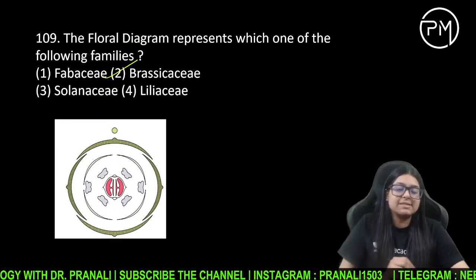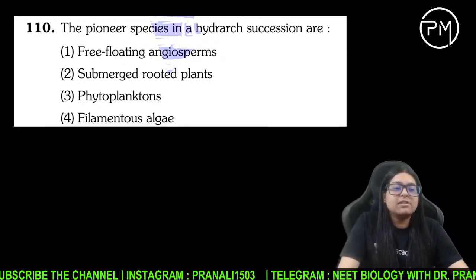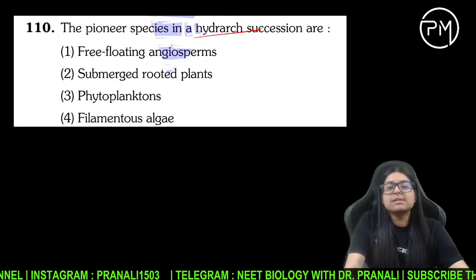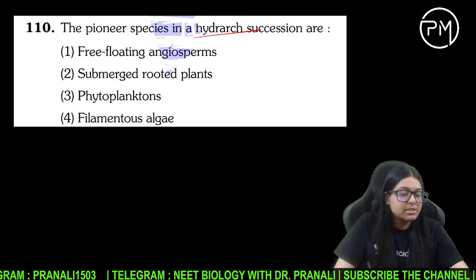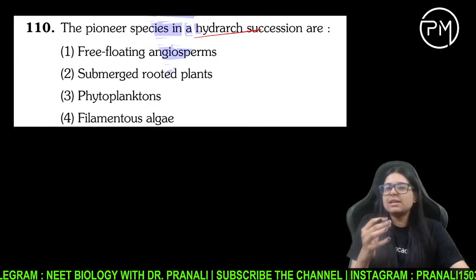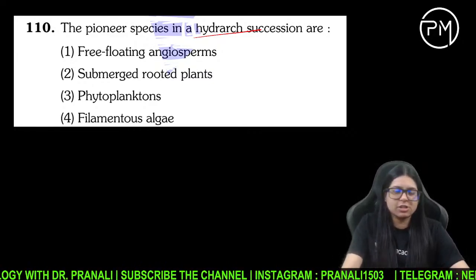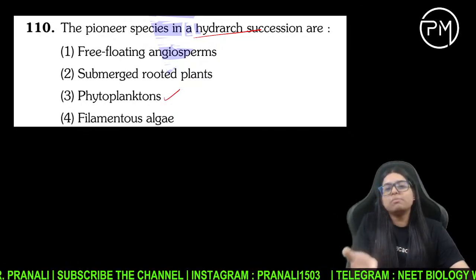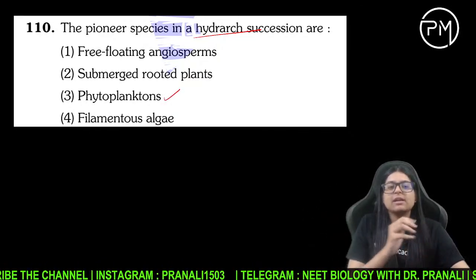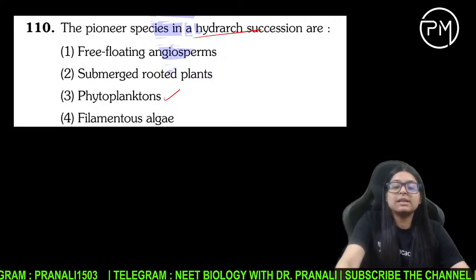Jo diagram dikhaya woh floral diagram kis family ko belong karta hai. Hydrarch succession hai — paani mein succession ho raha hai. Toh jo pioneer species hogi, yaani ki aise species jo sabse pehle aati hain kisi bhi succession mein, it is going to be phytoplanktons. Sabse pehle phytoplanktons aayenge, phir submerged, land, floating sab aayenge.